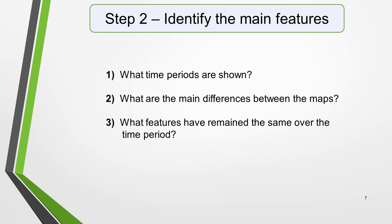All you are looking for are the main features. Start with the earliest map, identify the key features, and look to see how they have changed in the later map, and again in the final map if there are three. Here are some useful questions to ask. What time periods are shown? Are the maps of the past, present, or future situations? This is important to note because it will determine whether you write your essay using past, present, or future tenses.